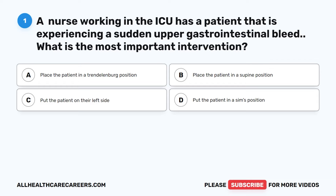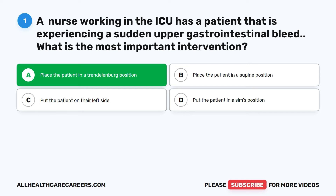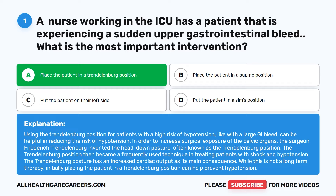The correct answer is A: Place the patient in a Trendelenburg position. Using the Trendelenburg position for patients with a high risk of hypotension, like with a large GI bleed, can be helpful in reducing the risk of hypotension. Surgeon Friedrich Trendelenburg invented this head-down posture to increase surgical exposure of the pelvic organs; it became a frequently used technique for treating patients with shock and hypotension, as its main consequence is increased cardiac output. While not a long-term therapy, initially placing the patient in Trendelenburg position can help prevent hypotension.